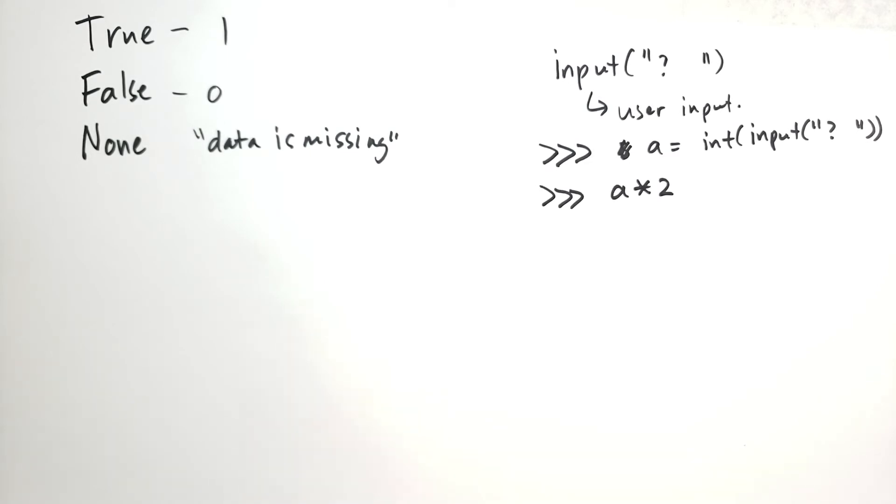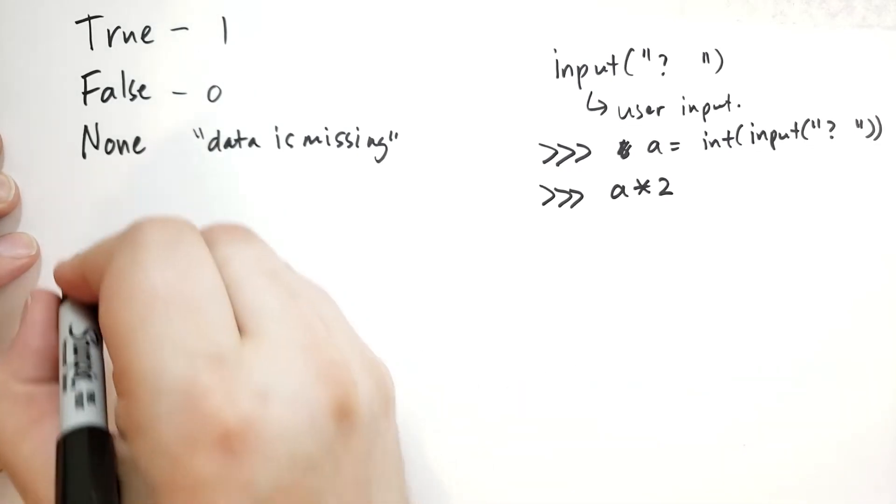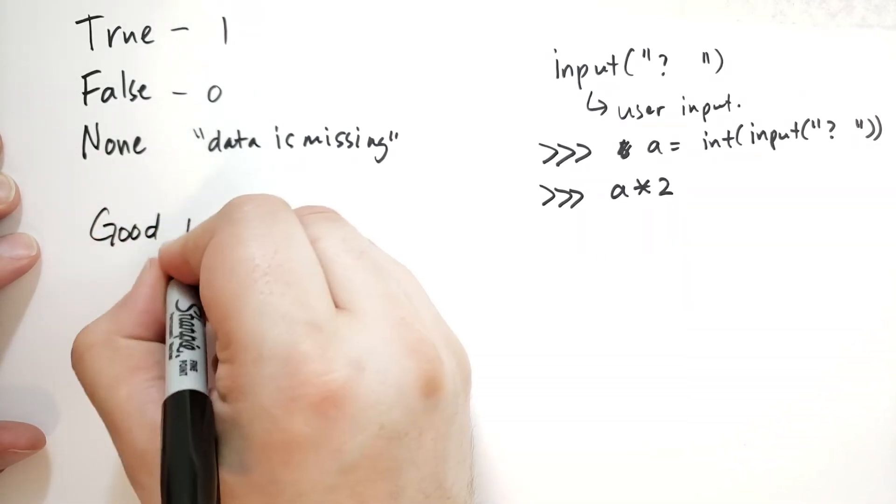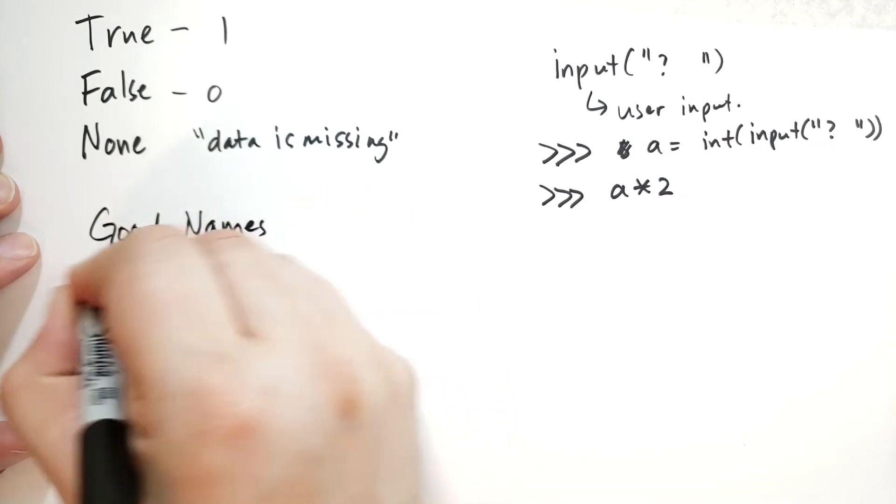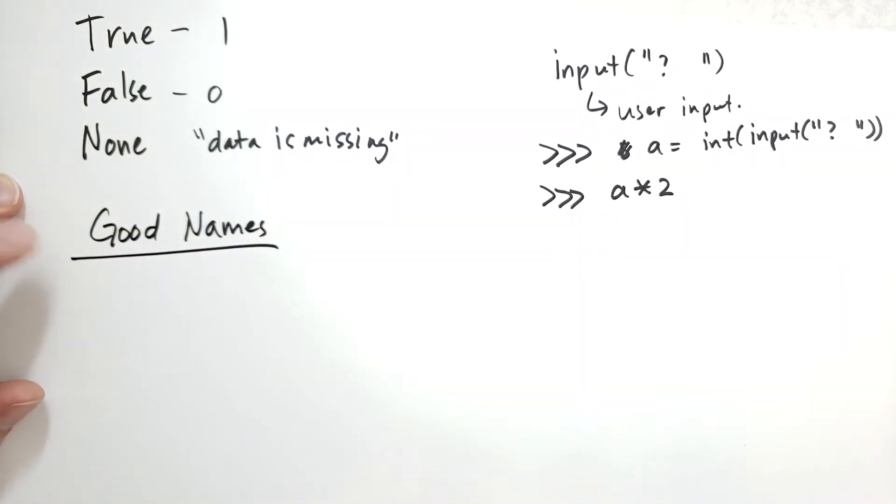Before we leave, I wanted to give some tips and tricks, some things that are important with variables. First of all, choosing good names is really hard. This is one of the hardest things that I've ever done in my career.